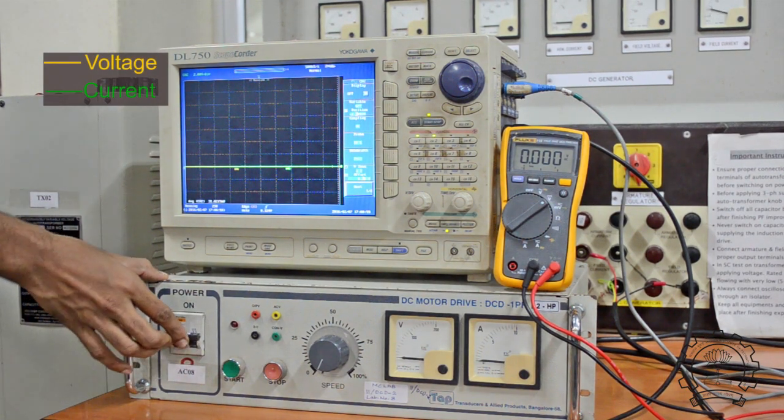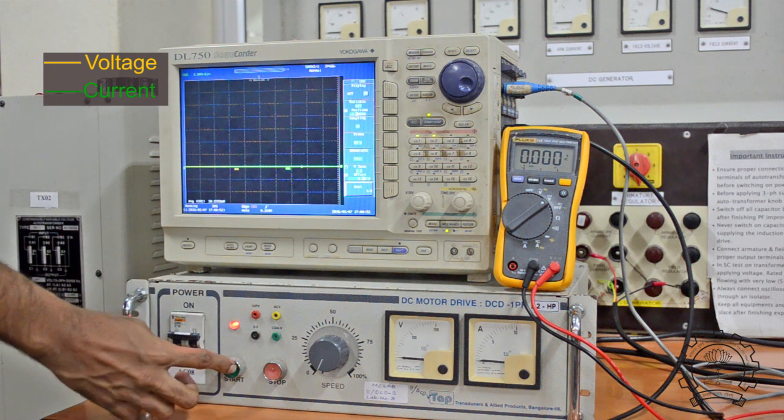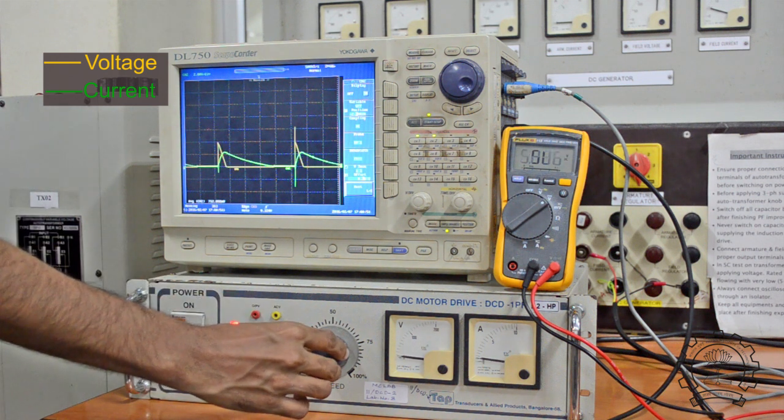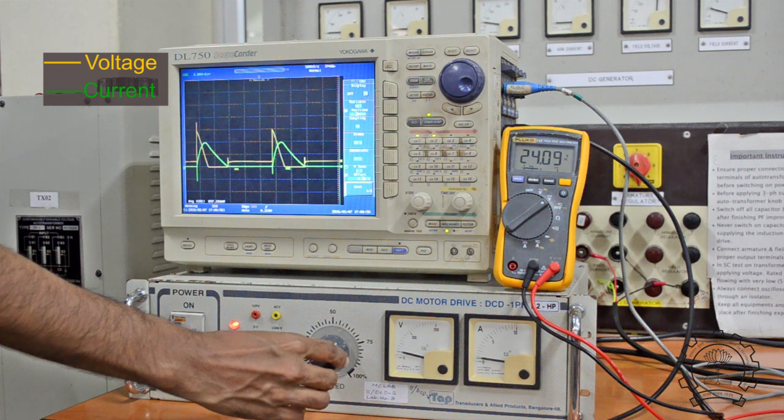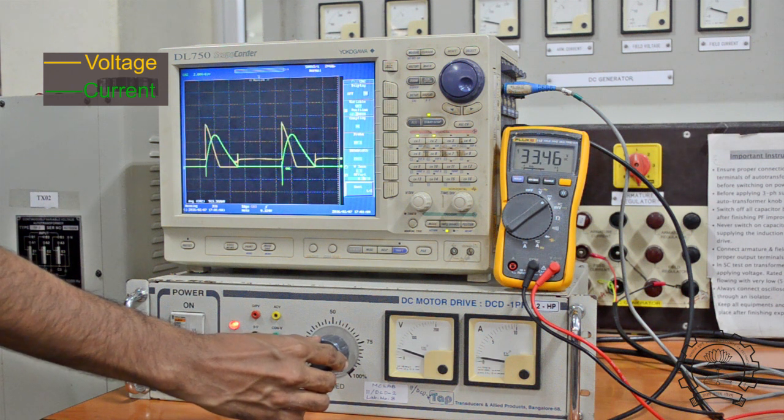At the starting condition, the firing angle is close to 180 degrees. I am going to reduce the firing angle. Observe the current and voltage waveform. When I am reducing the firing angle, the average voltage increases and you can see the back EMF rising.